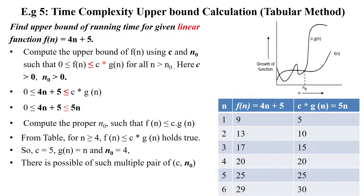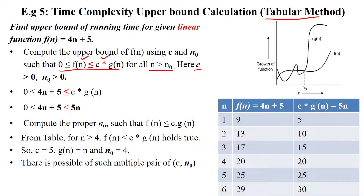Welcome to time complexity upper bound calculation using the tabular method. We will use a table to calculate the upper bound manually. The upper bound based on Big O notation is defined by the criterion: 0 ≤ f(n) ≤ c·g(n), where n is always greater than n₀, and both c and n₀ are positive numbers.